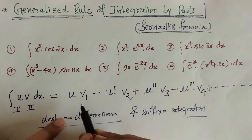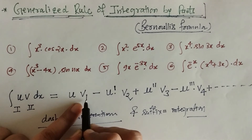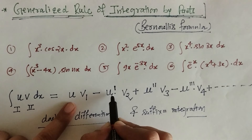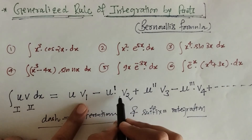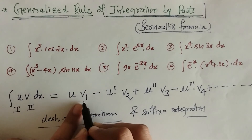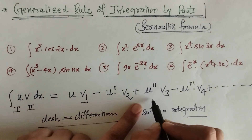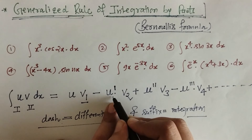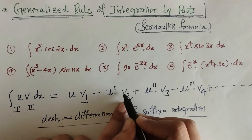So what we have here is v₁, v₂, v₃... and so on for each successive integration of v. In each term, we take the derivative of the first factor from the preceding term multiplied by the integration of v₂, that means the second factor.